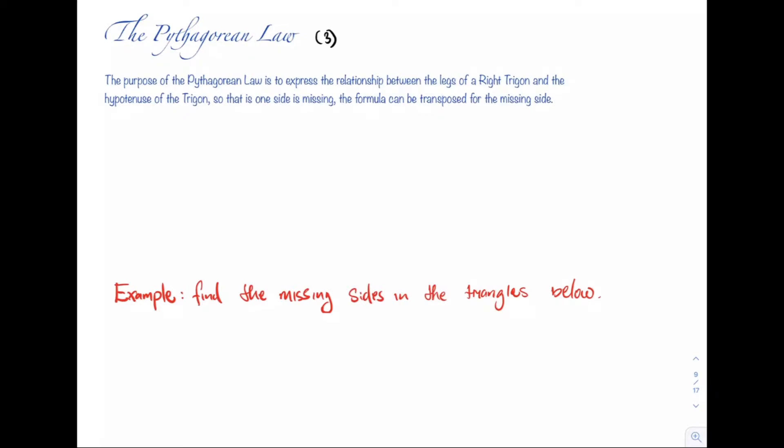Here we're continuing our series on trigonometry and we're now going to look at the Pythagorean law. The first thing we want to note is that the purpose of the Pythagorean law is to express the relationship between the legs of a right trigon and the hypotenuse of the trigon, so that if one side is missing, the formula can be transposed for the missing side.